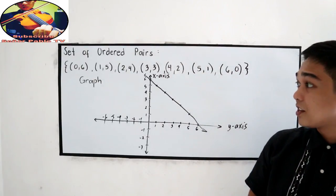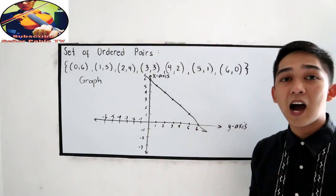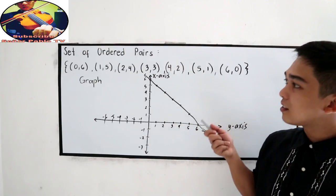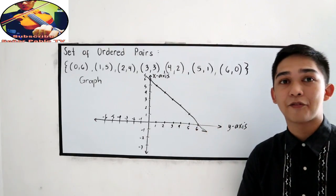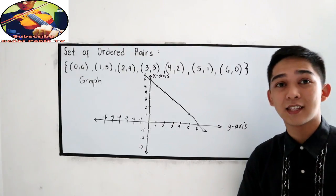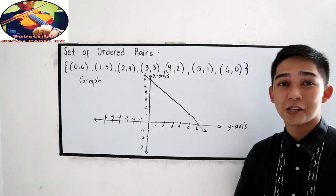And that is a linear function. So, this is how to plot the different points using our graph. And that can also be represented as our relation.